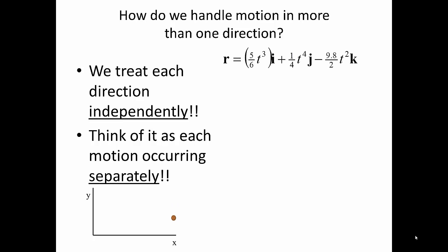If we have a position defined by the vector r equal to 5/6·t³·i plus 1/4·t⁴·j minus 9.8/2·t²·k, we can break out each direction separately and independently. The x position is 5/6·t³, the y position is 1/4·t⁴, and the z position is -9.8/2·t².